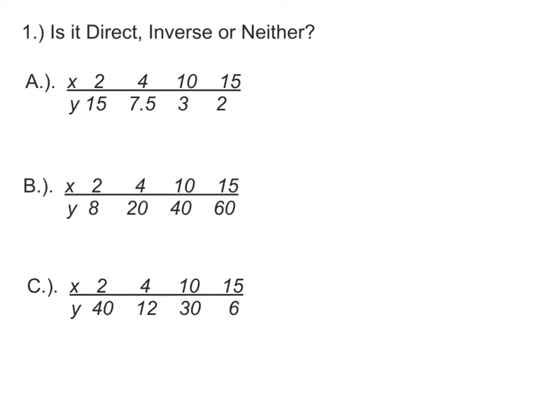So let's look at a pattern of numbers and try to tell if it's direct, inverse, or neither. In example A, we pay attention to what happens to y as the x's get bigger. So as the x's grow from 2 to 15, what are happening to the y values? It starts at 15 and then goes to 7.5 to 3 and to 2. So those values are getting smaller and smaller, so I would think that this is inverse variation.